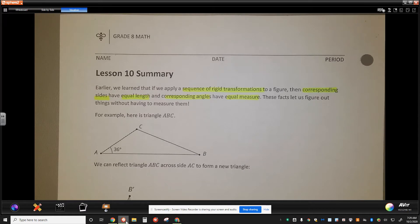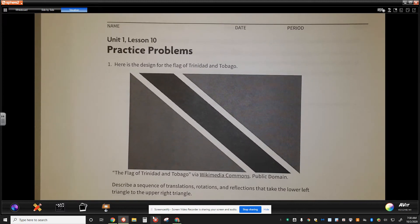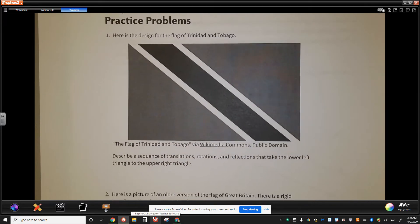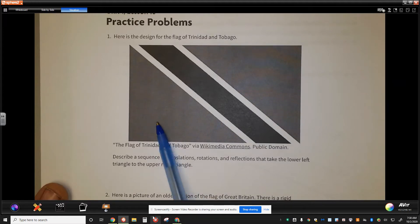So the homework today, we're going to use some of that information to help us speed up the process. First problem here is there's a design of a flag of Trinidad and Tobago. When we look at these, we want to describe a sequence of translations, rotations, reflections that can take the lower left triangle to this triangle.